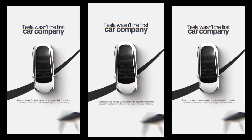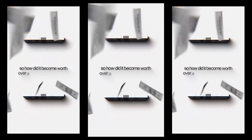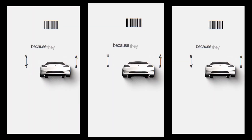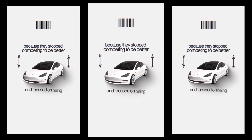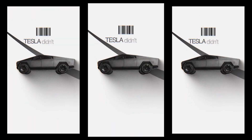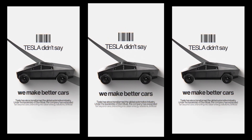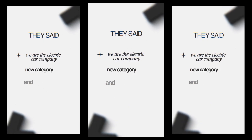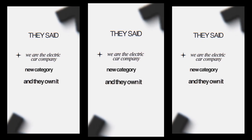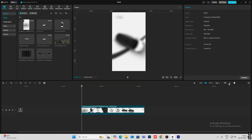Tesla wasn't the first car company, so how did it become worth over a trillion dollars? Because they stopped competing to be better and focused on being different. Tesla didn't say 'we make better cars' — they said 'we're the electric car company,' a new category, and they own it. Hi everyone, so today we are going to create another 3D reel in CapCut.